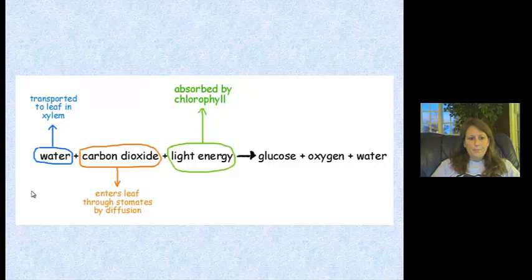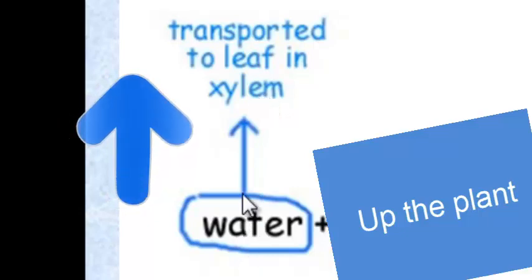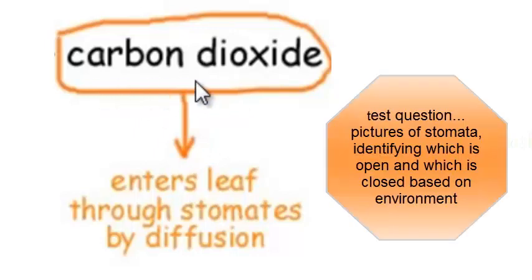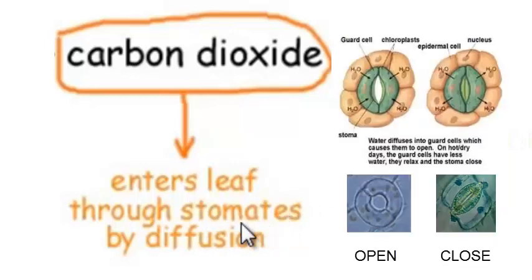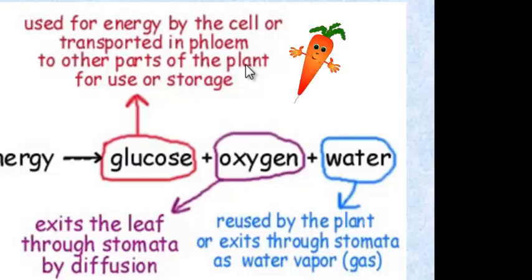Water is transported to the leaf in the xylem — remember, water goes from the roots up to the leaves. Carbon dioxide, which is what the plant needs, enters the leaf through the stomata and guard cells. Light is absorbed by chlorophyll, the pigment of the chloroplast. Glucose, the sugar made in the leaves, is transported through the phloem and stored in either the stems or the roots. Carrots are an example — you're eating the food the plant stores in the root structure.